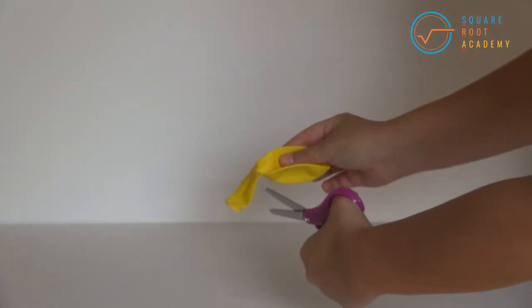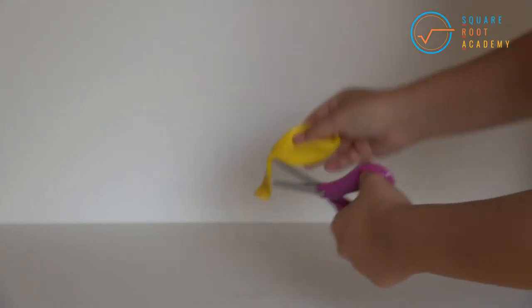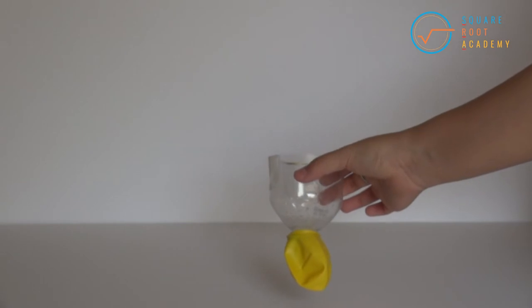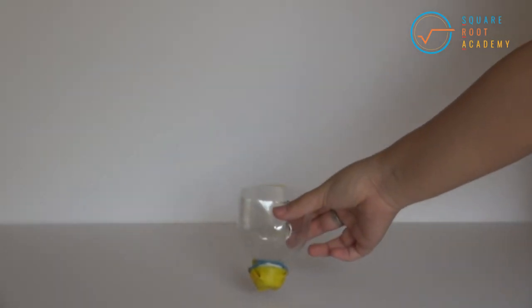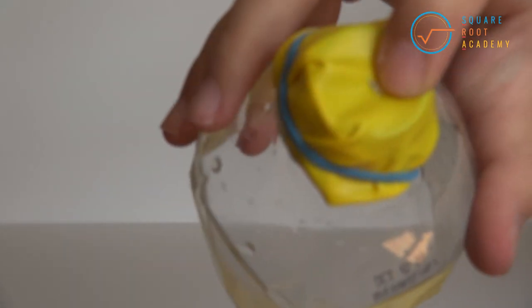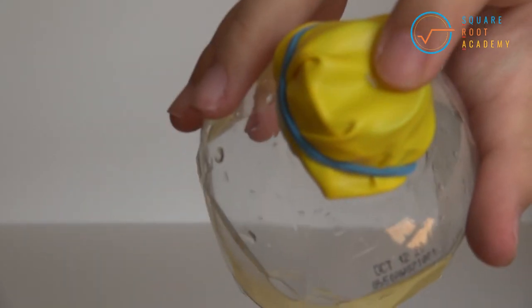Cut the long neck of a balloon off, leaving only the bulb. Stretch the bulb of the balloon over the tip of the bottle. Use a rubber band to secure the balloon over the tip. Cut a small slit, the width of a pencil, into the bottom of the balloon.